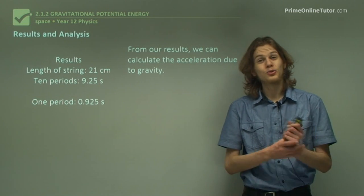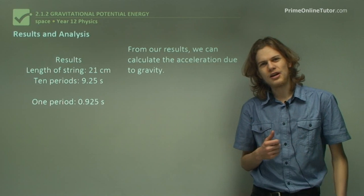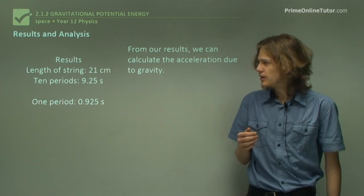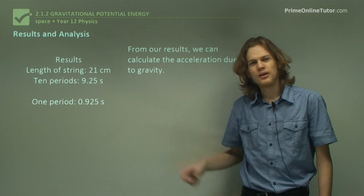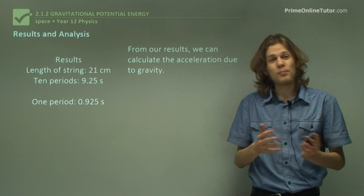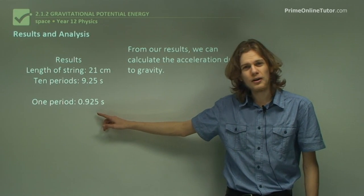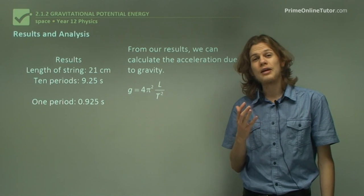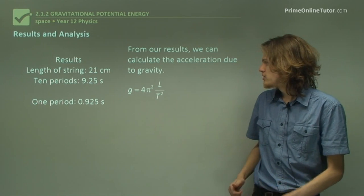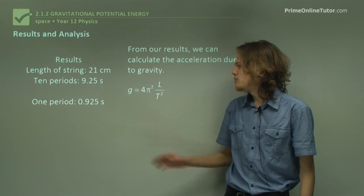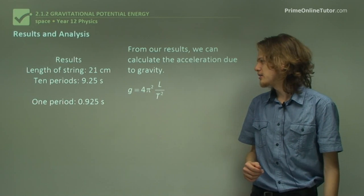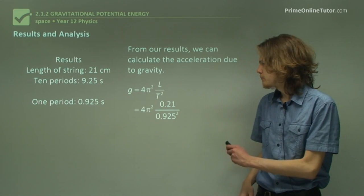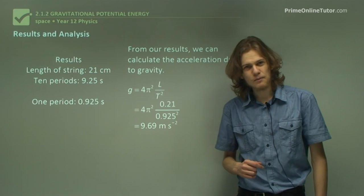Now that we have our results from our experiment, we can use them to figure out what the gravitational acceleration is. We know that 10 periods take 9.25 seconds, so one period is simply that number divided by 10 — giving us 0.925 seconds. We can substitute in the length of the pendulum being 21 centimetres and the period being 0.925 seconds. Using a calculator, we find that the acceleration due to gravity is about 9.69 metres per second squared.